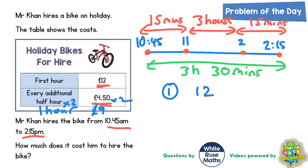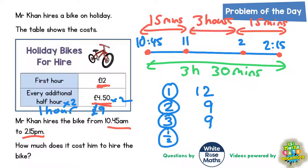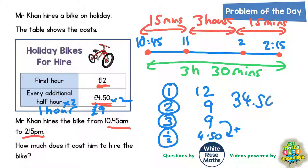So in the second hour he would pay £9, and in the third hour he would pay £9. In the fourth hour, he doesn't do a full hour — he only does half an hour — so that extra half hour is just £4.50. Adding it all up: 12 plus 9 is 21, plus another 9 is 30, and 30 plus £4.50 gives a final answer of £34.50 to hire the bike.